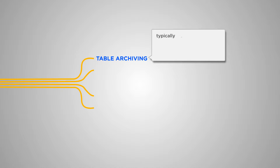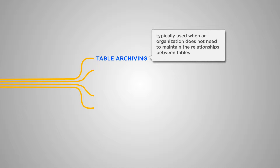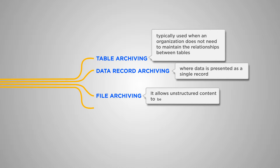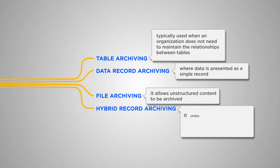1. Table archiving, typically used when an organization does not need to maintain the relationships between tables. 2. Data record archiving, where data is presented as a single record. 3. File archiving, which allows unstructured content to be archived. 4. Hybrid record archiving, which unites structured and unstructured content into a single record.